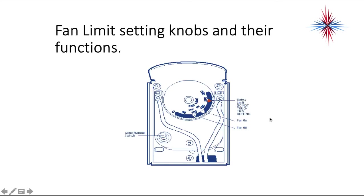This is a picture of the fan limit settings and their functions. When you look at the front of a fan limit, you have an auto/manual switch. If you want to test the motor, you can pull this switch out — sometimes it's a lever at the top — and it will allow you to turn the fan motor on manually. The fan off setting is your first setting and lowest temperature. The fan on is your middle one. And the safety limit — the one you really don't want to move from the factory setting — is going to be the highest side.